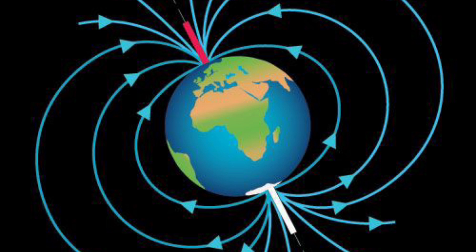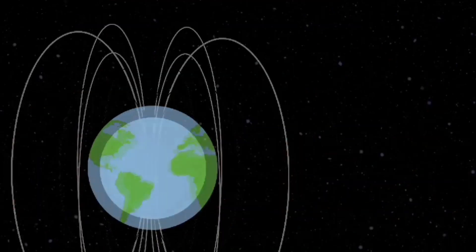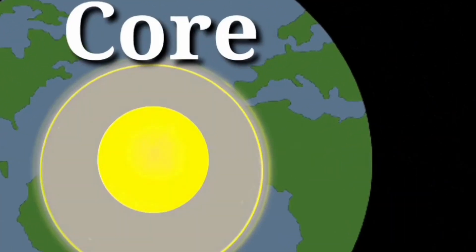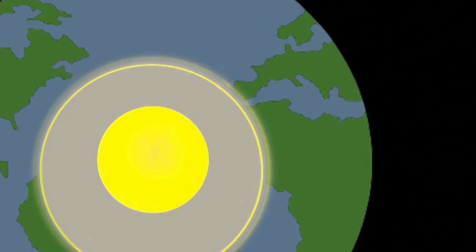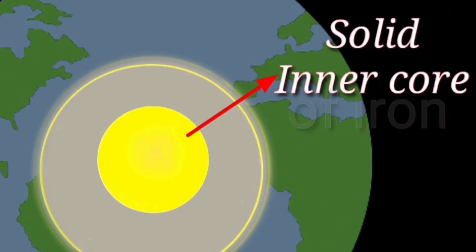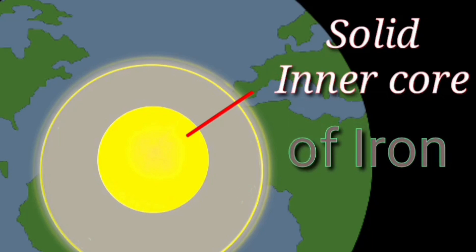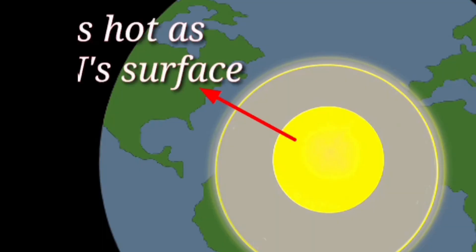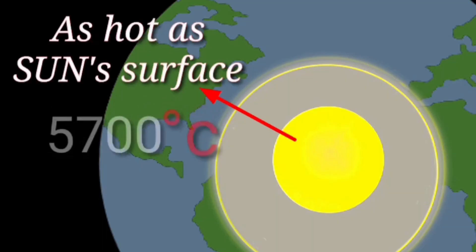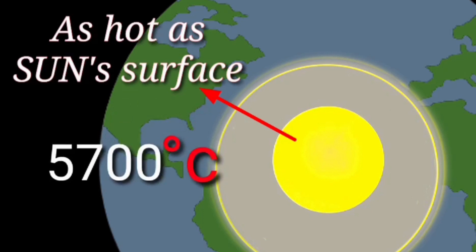The idea of Earth having magnetism is supported by following facts. First, a freely suspended magnet always comes to rest in N-S direction. Second, a piece of soft iron buried in N-S direction inside the Earth acquires magnetism.